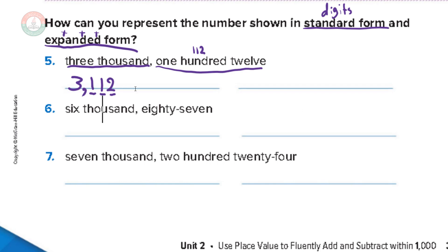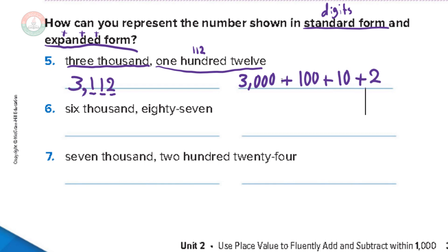How do we write 3112 in expanded form? Write the three with three zeros — three thousand — plus the next digit in the hundreds place: 100, plus the tens digit: 10 (one zero), plus the ones digit: 2. So three thousand plus one hundred plus ten plus two. You can see that if you add these numbers you get back the original number, three thousand one hundred and twelve.